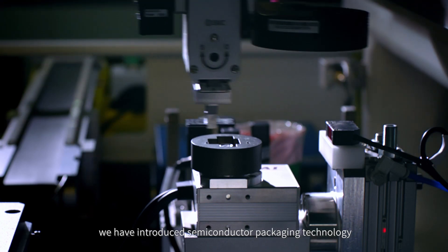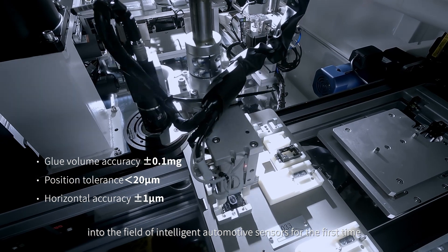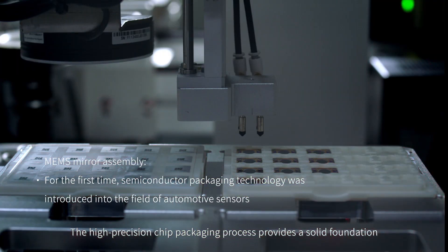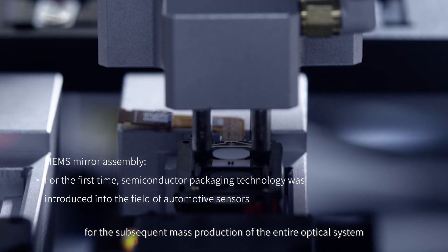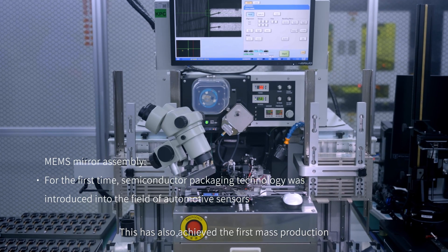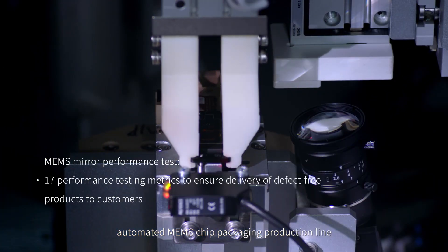To this end, we have introduced semiconductor packaging technology into the field of intelligent automotive sensors for the first time. The high precision chip packaging process provides a solid foundation for the subsequent mass production of the entire optical system. This has also achieved the first mass production automated MEMS chip packaging production line.